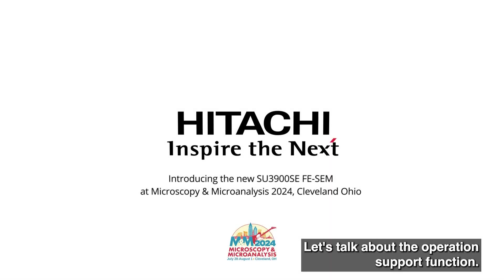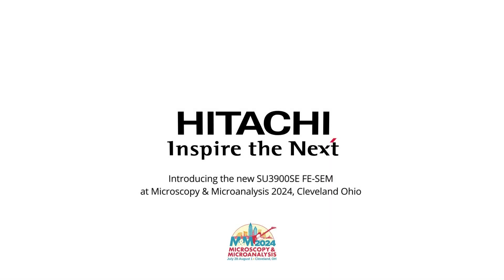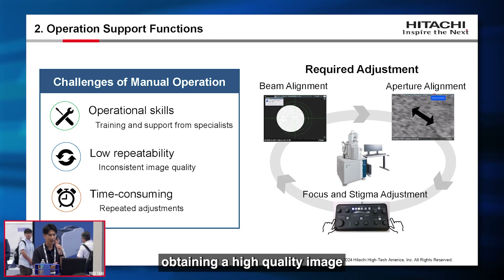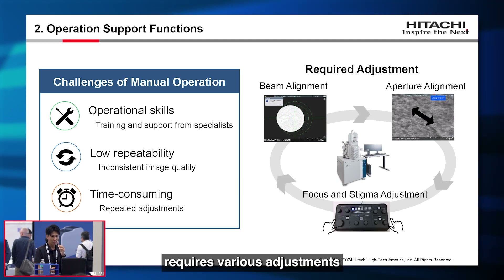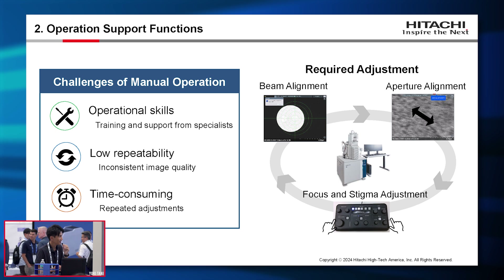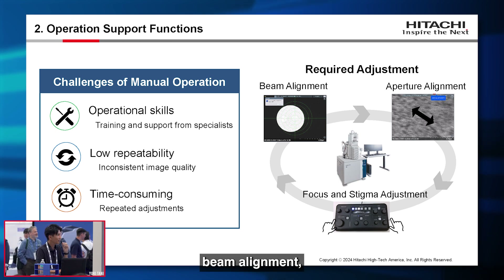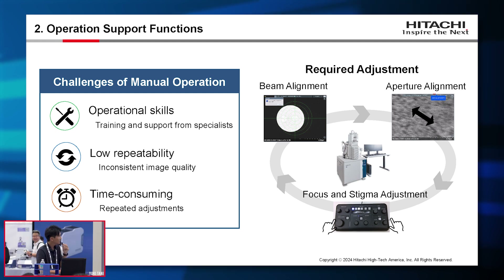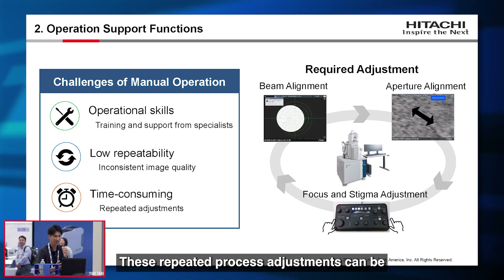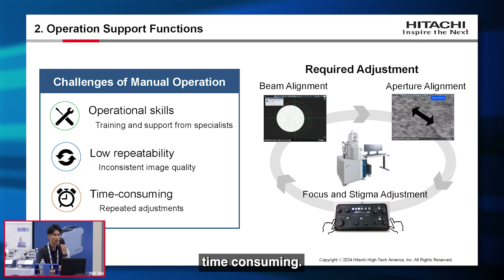Let's talk about the operation support function. Obtaining high-quality images requires various adjustments, such as beam alignment, aperture alignment, focus, and stigma alignments. These repeated process adjustments can be time consuming.